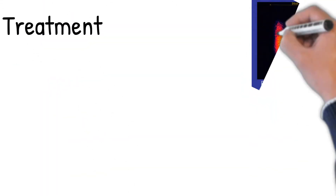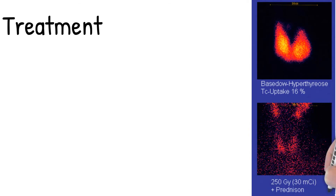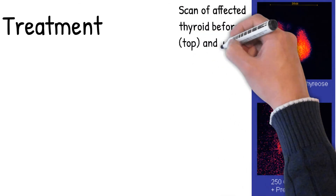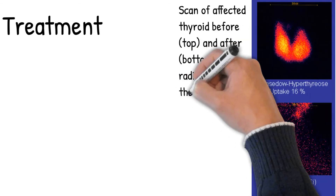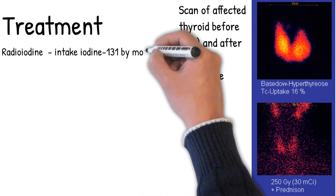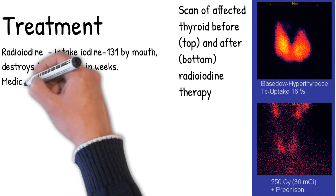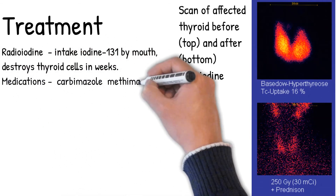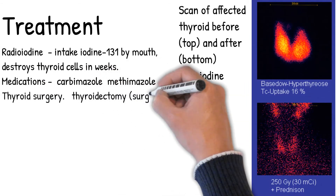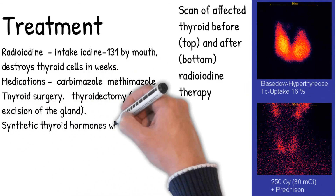The three treatment options are: radioiodine therapy — intake of iodine-131 by mouth, which destroys thyroid cells in weeks; medications — the main antithyroid drugs are carbimazole in the UK and methimazole in the US; and thyroid surgery — thyroidectomy, which is surgical excision of the gland. Hypothyroidism after treatment is treated with synthetic thyroid hormones for life.